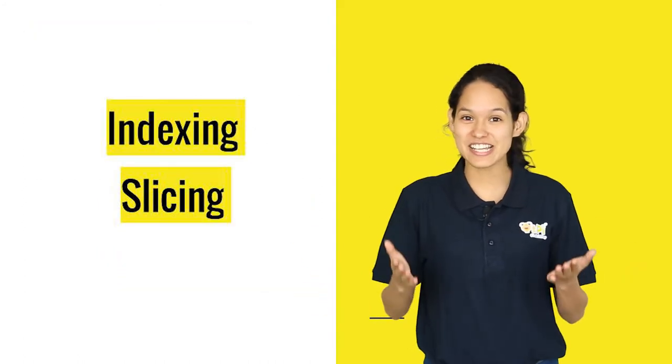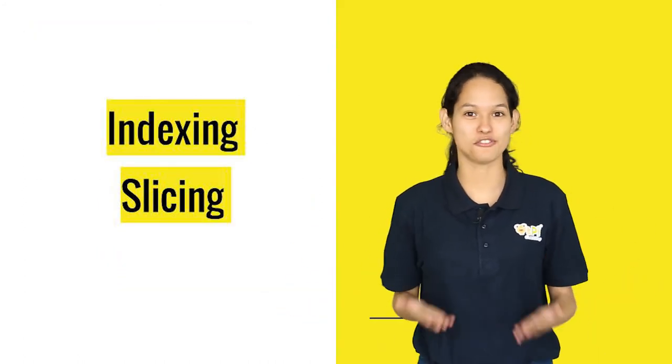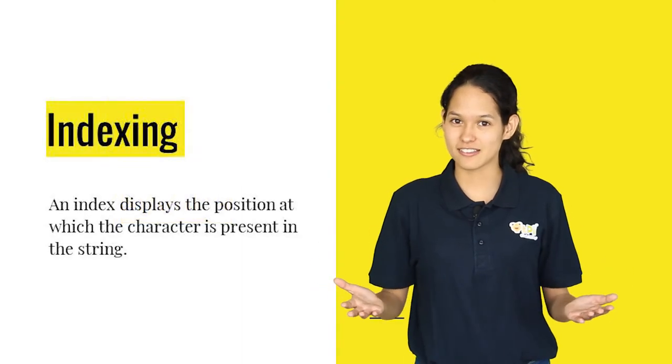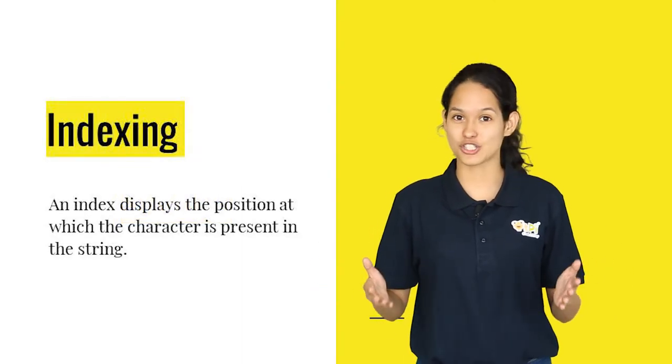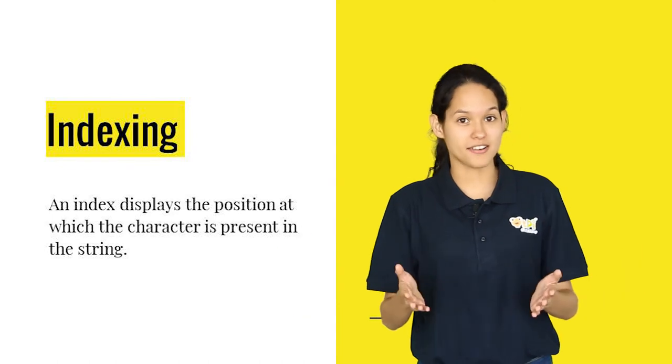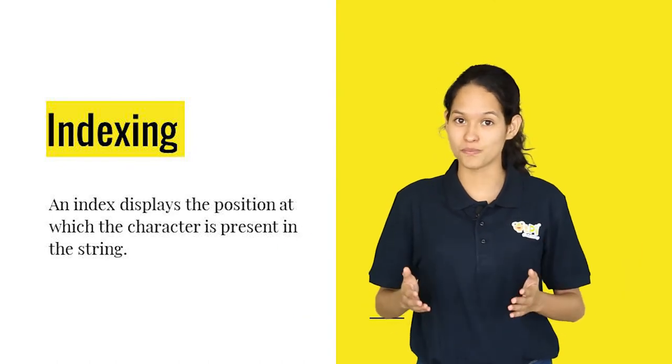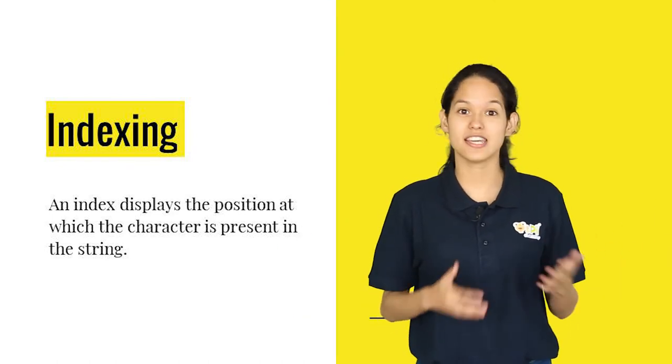Now let's take a look at what is indexing and slicing of a string. First what is indexing? Every string has a collection of characters where every character has an index value which starts from zero and increments by one.